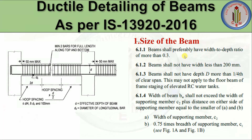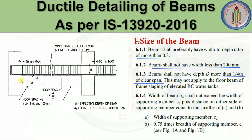Now let's start with the size of the beam as per IS 13920:2016, clause 6.1.1. The beam shall preferably have a width-to-depth ratio of more than 0.3. The beam shall not have a width less than 200 mm. The beam shall not have an overall depth D more than one-fourth of the clear span. This condition may not apply to floor beams of frame staging of elevated RC water tanks.